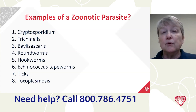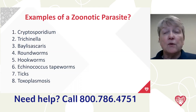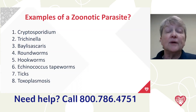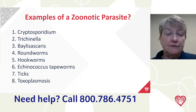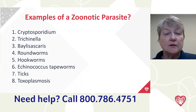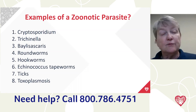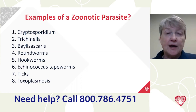Trichinosis used to be seen in pork back in the 1930s when pigs were fed garbage, but we no longer worry about it — you can eat pork slightly pink now. Baylisascaris is spread through raccoon feces. Roundworms and hookworms are very common parasites in dogs and cats that live in our homes. Most tapeworms in dogs are not contagious to people, but Echinococcus is, and it's a very serious disease in people. Ticks we share with dogs. Toxoplasmosis from cats can spread to pregnant women and cause damage to the fetus.